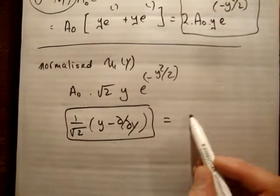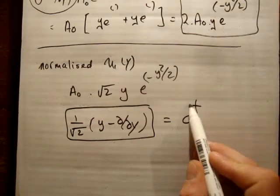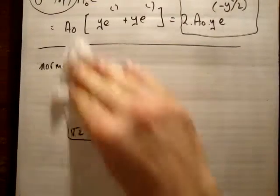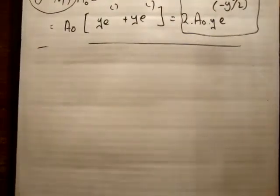So we might say this is our raising operator, which we're going to call A plus, or A dagger you might call it, because it's an adjoint. So that's our normalized one. So just to convince you as well, and this is going to be a hand-waving argument, I'm not really going to get into the mathematics of it.